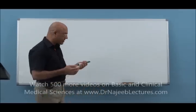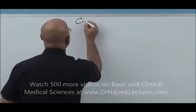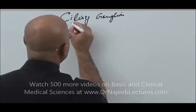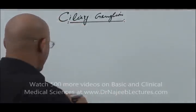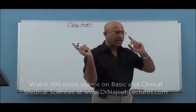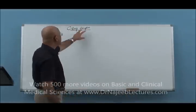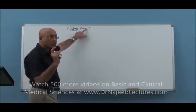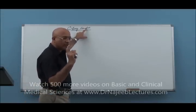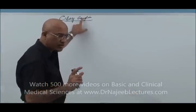Today we are going to talk about the ciliary ganglion. The ciliary ganglion is basically a parasympathetic ganglion in the head, located in the orbit. There are two ciliary ganglia — one in the right orbit and another in the left orbit. A ganglion means a collection of neuronal cell bodies outside the central nervous system.